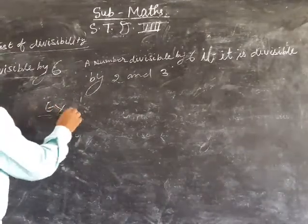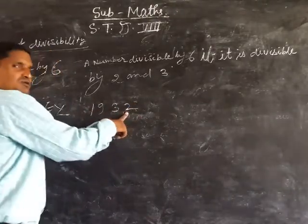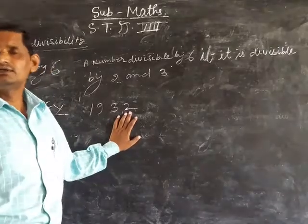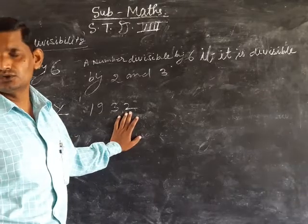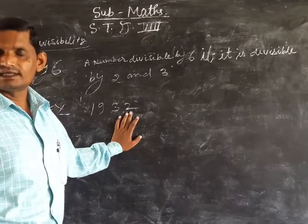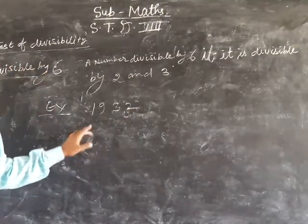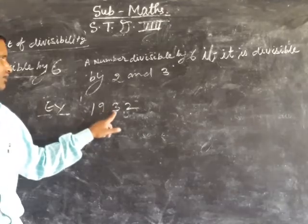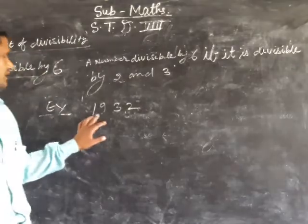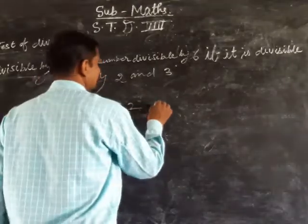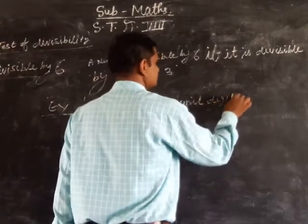Example: 1, 9, 3, 2. Is it divisible by 6? Because it is divisible by 2 and 3, then it is divisible by 6. The sum of digits: 1 plus 9 plus 3 plus 2 equals 15. Now 15 is divisible by 3. So 1932 is divisible by 3.